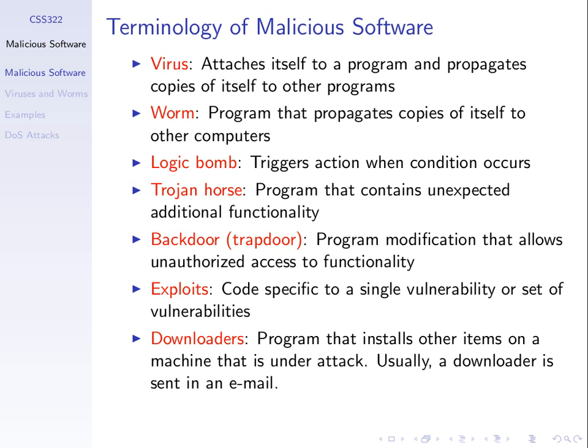By definition, a virus attaches itself to a program — it's a piece of code that attaches to another program and does something malicious. A worm is an independent program, a piece of code that can be executed on its own. The main difference is that a virus attaches to an existing program you and I may use, whereas a worm is a standalone program that does something malicious. We'd run a worm if we were tricked into thinking it's a normal program, or if some other program executed it for us.